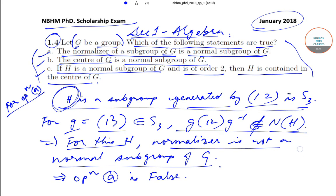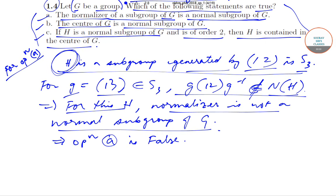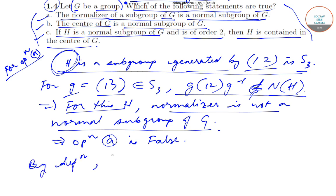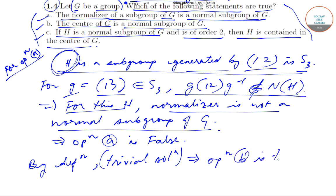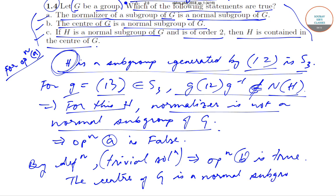Now shifting focus to Option B, which states that the center of G is a normal subgroup of G. This is true by definition — or using a trivial argument — that the center Z(G) is always a normal subgroup of G. So option B is true.